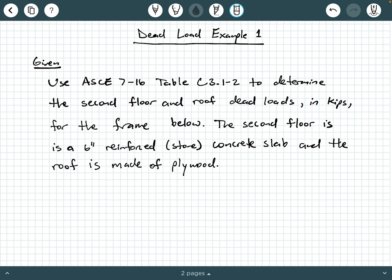So let's look at our given information. We are asked to use ASCE 7-16 Table C.3.1-2, so that's in the commentary section of ASCE 7-16, to determine the second floor and roof dead loads in kips for the frame below. We have not drawn the frame yet. We're going to draw that together. The second floor is a six-inch reinforced stone concrete slab, and the roof is made of plywood that is two inches thick.